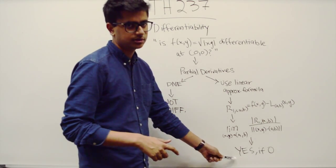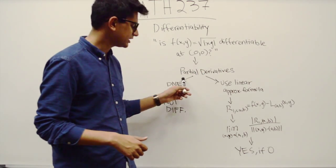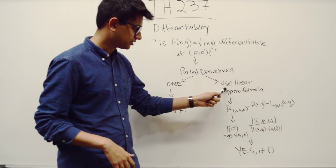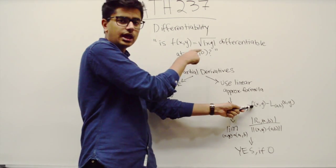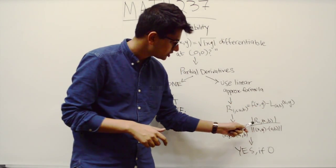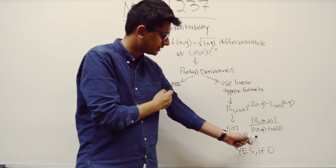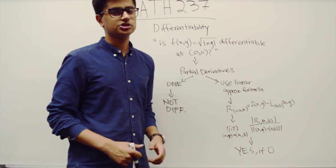Let me quickly recap: you start off with your partial derivatives. If they don't exist, the function is not differentiable. If they do exist, you find the linear approximation. You then use the remainder, which is your function minus your linear approximation, over the magnitude of the distance between (x,y) and (a,b). If that limit is zero, your function is differentiable.